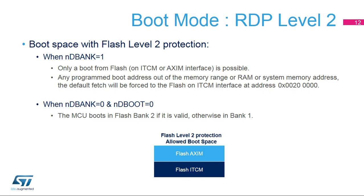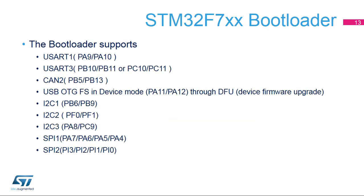When STM32F7 readout protection level 2 is enabled, the boot address is restricted to only addresses in flash. In single-bank configuration, any programmed boot address out of range defaults to flash on the ITCM interface at address 0x00200000. In dual-bank configuration, the STM32F7 boots from flash bank 2 if it is valid, otherwise from bank 1. The on-chip bootloader allows programming of flash memory through a serial communications peripheral; supported protocols are USART, USB, CAN, SPI, and I2C. Note that the DFU CAN may work with external quartz oscillator values in the range of 4 to 26 MHz, and the USART uses the internal HSI.